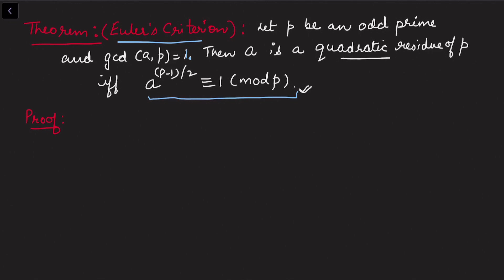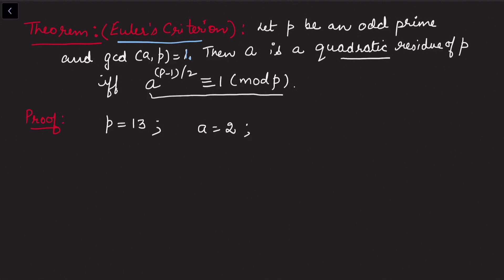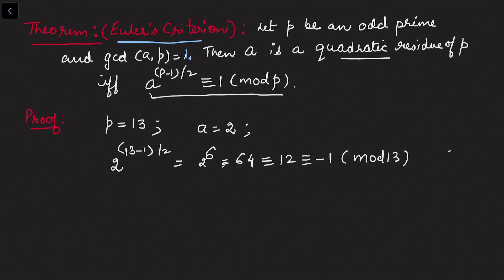Take p = 13 and let a = 2. I want to verify whether this congruence is satisfied, meaning 2 is a quadratic residue. Computing 2^((13-1)/2) = 2^6 = 64. Now 64 ≡ 12 ≡ -1 (mod 13). This does not satisfy the given criteria, so 2 is not a quadratic residue modulo 13.